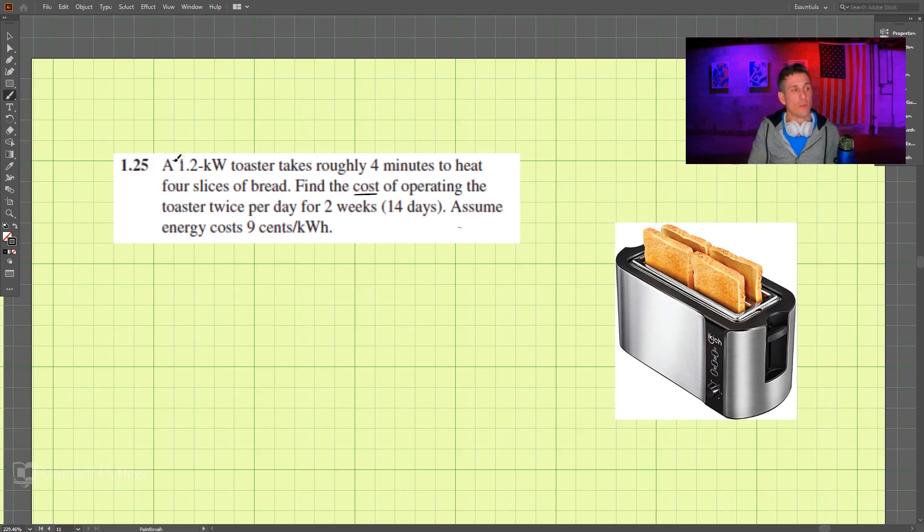This is a problem that deals with a toaster. We have four pieces of bread here and it's a 1.2 kilowatt toaster, so that's the power of this toaster. It takes four minutes to cook this bread. We're to find the cost of running the toaster twice a day for two weeks, or 14 days.